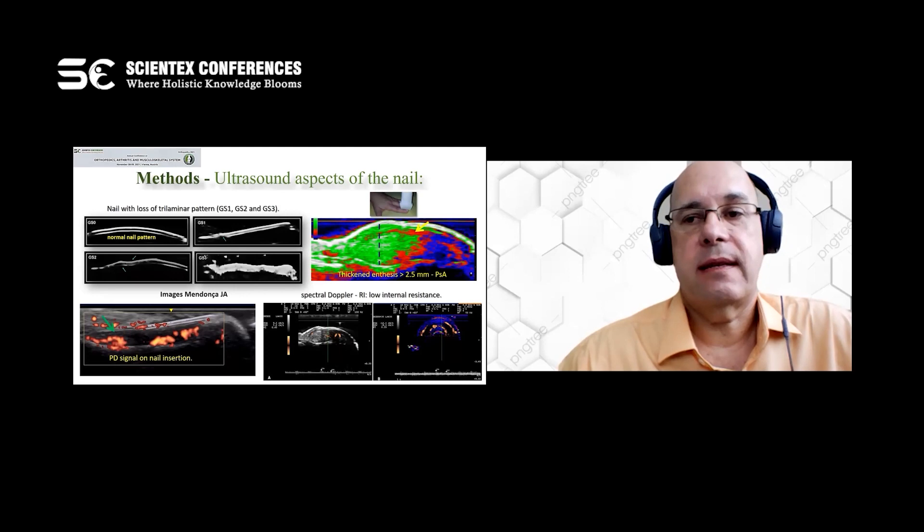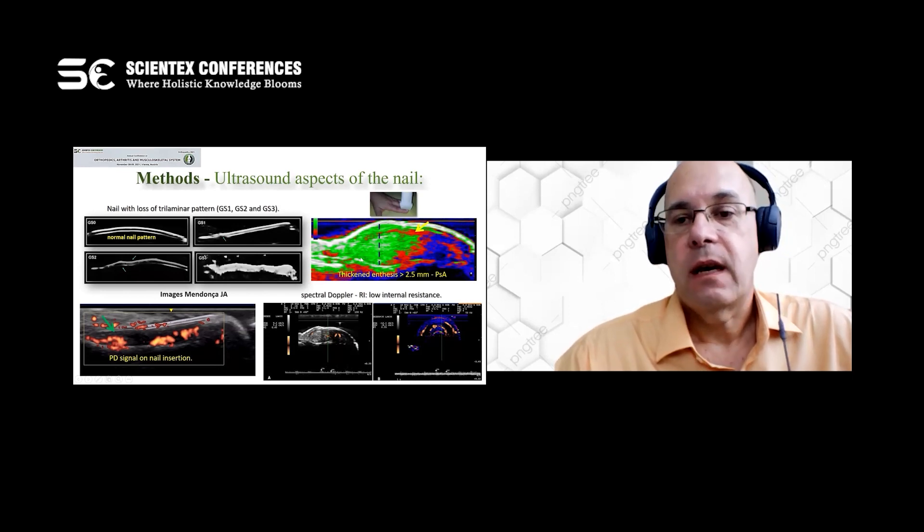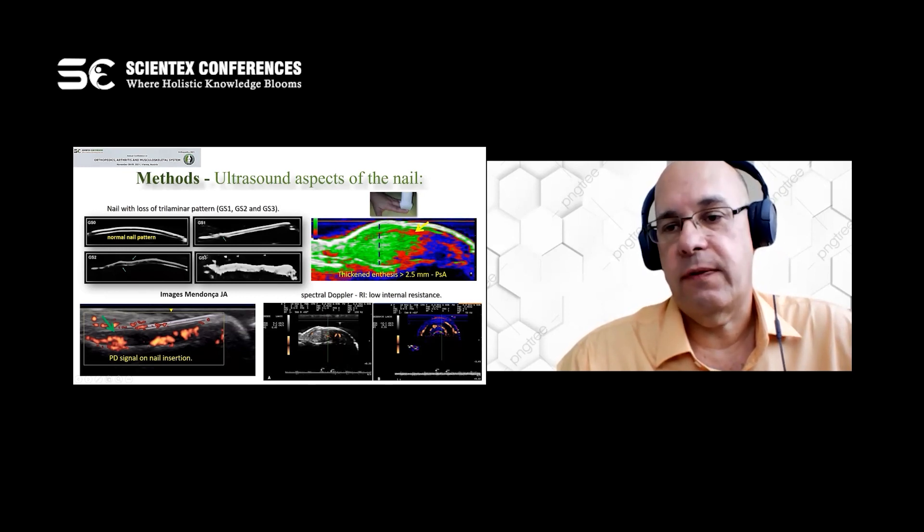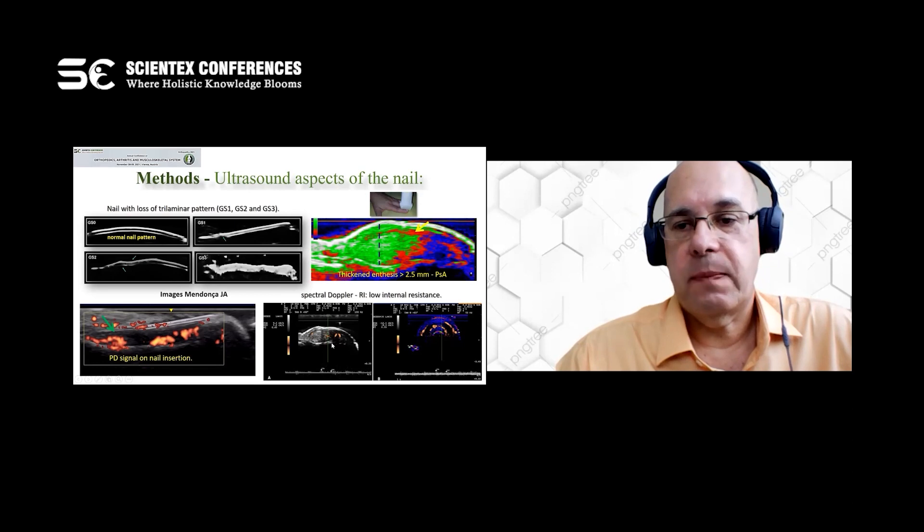The ultrasound aspects of the nail: nail with loss of trilaminar pattern versus trilaminar, and loss of trilaminar pattern in grayscale grades 1, 2, and 3. Other changes: thickness greater than 2.5 millimeters, PD signal on nail insertion, and spectral Doppler.